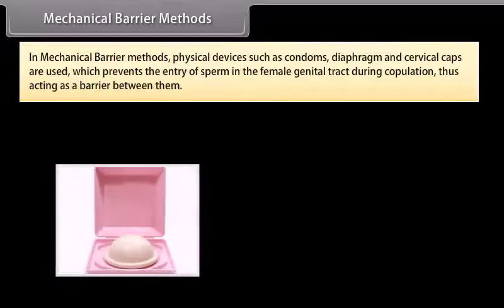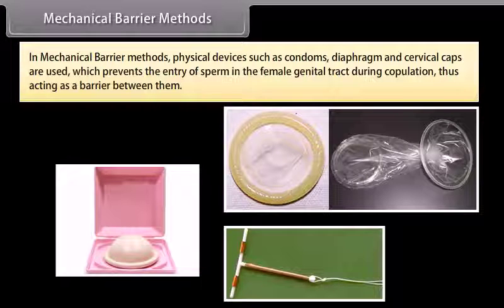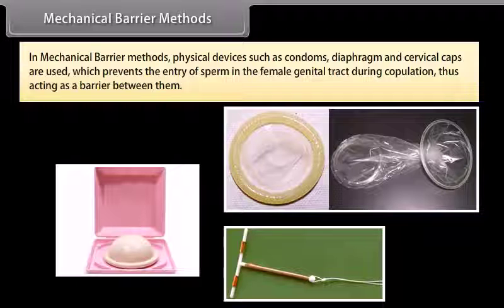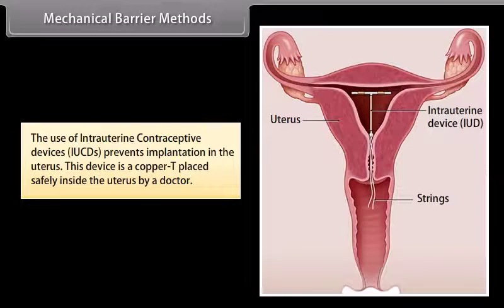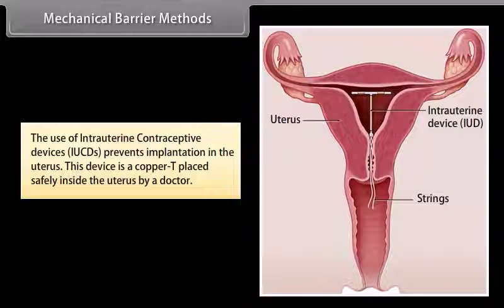In mechanical barrier methods, physical devices such as condoms, diaphragm, and cervical caps are used, which prevent the entry of sperm into the female genital tract during copulation, thus acting as a barrier. The use of intrauterine contraceptive devices (IUCDs) prevents implantation in the uterus. This device is a copper-T placed safely inside the uterus by a doctor.